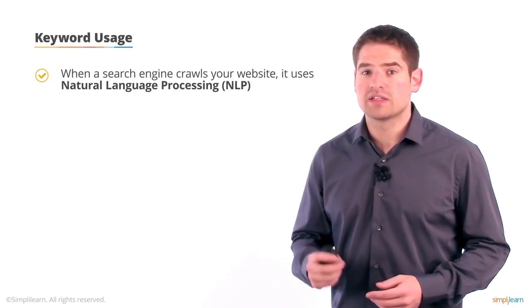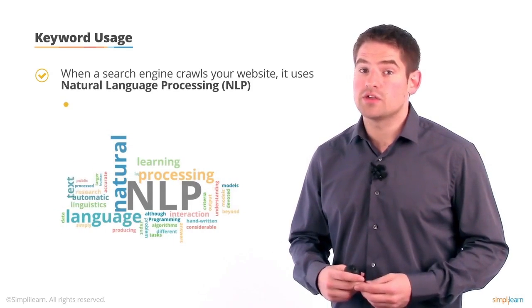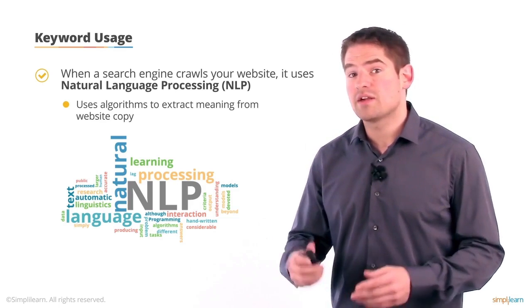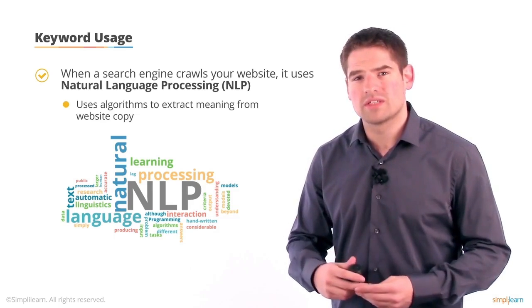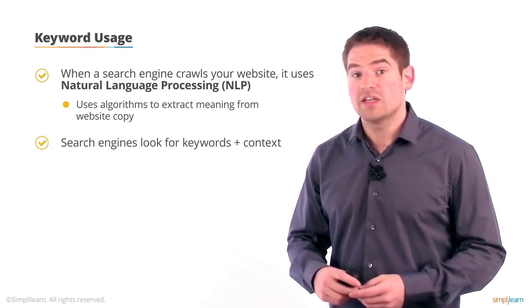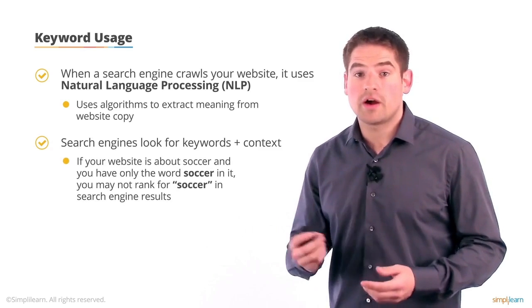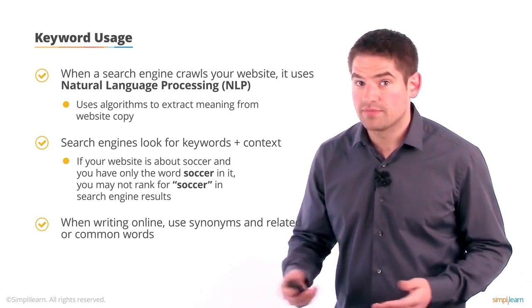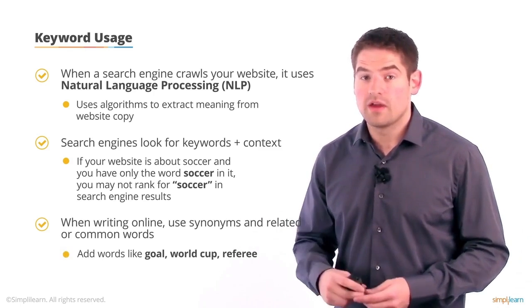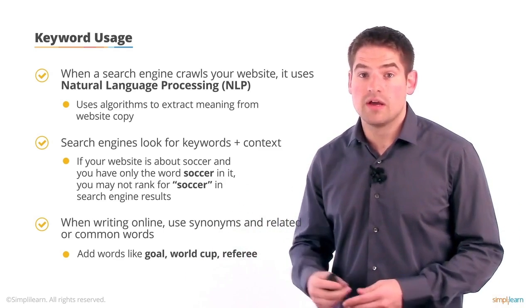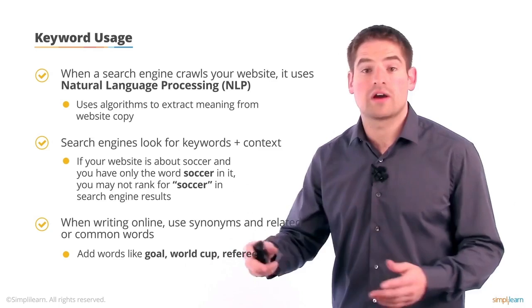When a search engine crawls and processes your website, it doesn't simply look for instances of keywords — it's a lot more complex than that. It's using a technology called NLP, natural language processing. What it's trying to do is use algorithms to understand the meaning of text the same way humans do when they listen to people talk or read. Instead of just looking for specific phrases or word order, it tries to extract what's behind that — what is trying to be expressed: emotion, feeling, topic. For example, you may say just 'soccer,' but just having that word isn't enough. Naturally, you'll also use words like goal, world cup, and referee — and Google takes these into account to understand your relevance for that keyword through synonyms and contextually related words.